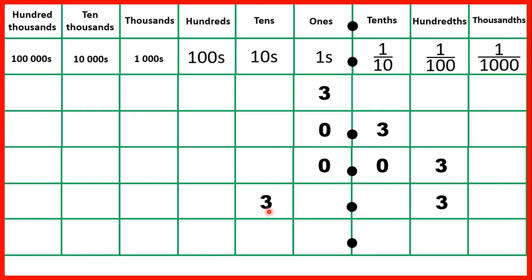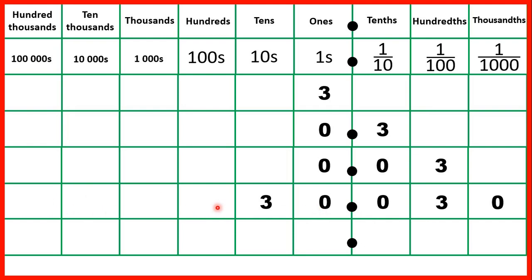Now what if we have three tenths and three hundredths? All of our other place values are really zeros, but we don't need zeros at the start of a whole number, and we don't need zeros on the end of decimals. But we do need this zero here because we need to show that this three stands for three tenths. We need a zero in our ones because we count whole number place values from the decimal point. We also need this zero in our tenths so that the three is in our hundredths column — the second digit after the decimal point.